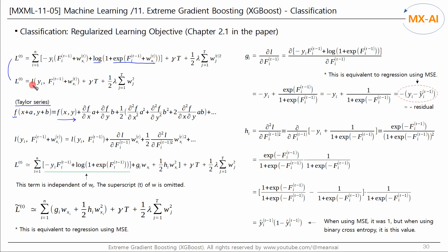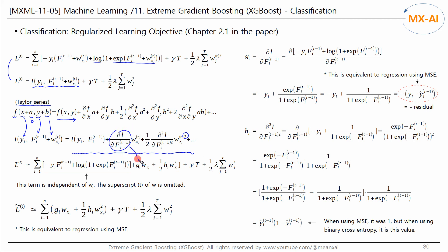Let's find the Taylor series for this loss function. The variable x in function f corresponds to y in the loss function, and a is 0. The variable y corresponds to the log odds f, and b corresponds to the output value w. We find a quadratic approximation of the loss function: the first-order partial derivative of the loss with respect to f is defined as g, and the second-order partial derivative is defined as h. Using binary cross-entropy for this loss, the objective function can be approximated accordingly.